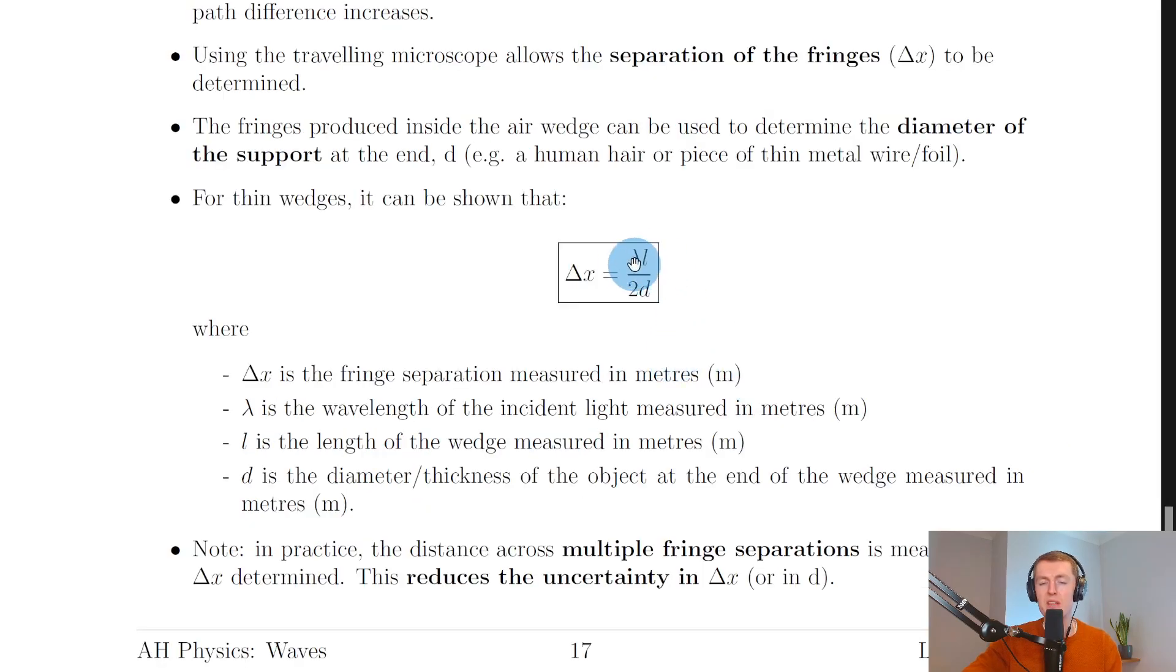Hopefully you can see the bigger the wavelength of the light, the bigger the fringe separation, and also the relationship between fringe spacing and the thickness d. If we rearranged for d, we could get d = λl/2Δx. So the bigger the fringe separation, the smaller the thickness or diameter of the object. Or the smaller the fringe separation, the larger the diameter or thickness of the object.